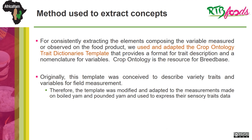For the methods used to extract these concepts: for consistently extracting the elements composing the variable measured or observed on the food product, we used and adapted the crop ontology trait dictionary template, which is available on the crop ontology website. This template provides a format for trait description and a nomenclature for variables, and it is this crop ontology that is the resource of breed base. Originally, this template was conceived to describe variety traits and variables for field measurements. Therefore, it had to be modified and adapted to the measurements made on boiled yam and pounded yam, and used to express their sensory data.